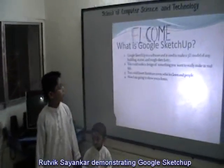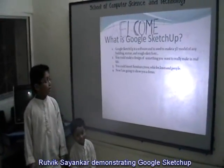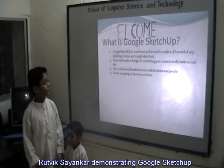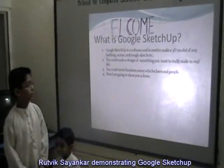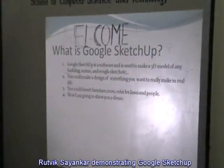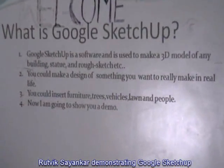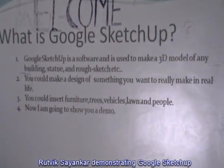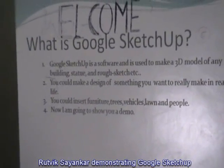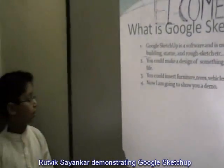What is Google SketchUp? Google SketchUp is a software used to make 3D models of any building, statue, and rough sketch. You could make a design of something you really want to make in real life. You could insert furniture, trees, vehicles, lawn, and people.